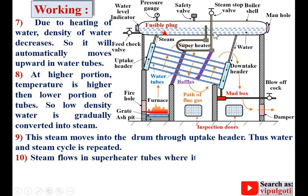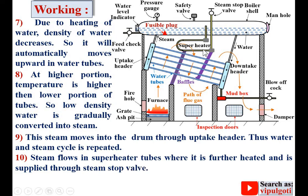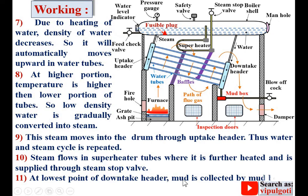Steam flows through the superheater tubes where it is further heated and is supplied through the steam stop valve where it is required. At the lowest point of the downtake header, mud is collected by the mud box and is removed with the help of the blow-off cock.